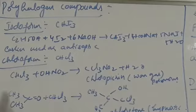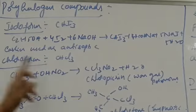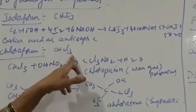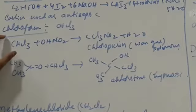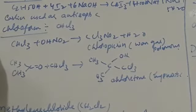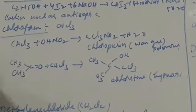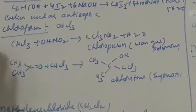Next, chloroform — formula CHCl3, having 3 halogen atoms. Chloroform is used in the preparation of freons, which are chlorofluorocarbons. Chloroform has many uses.